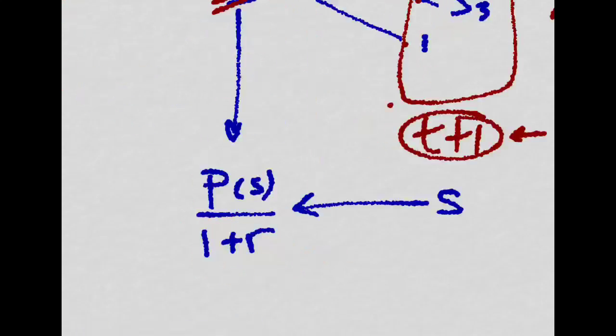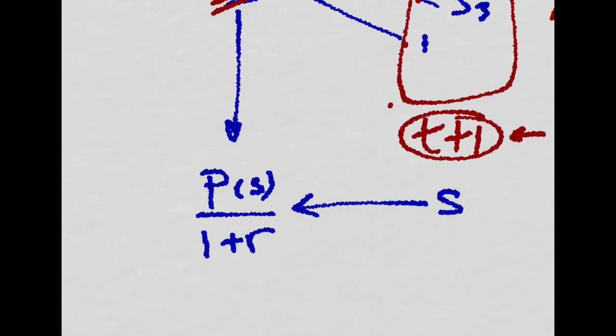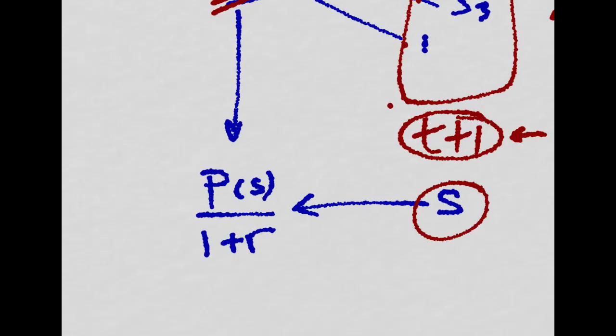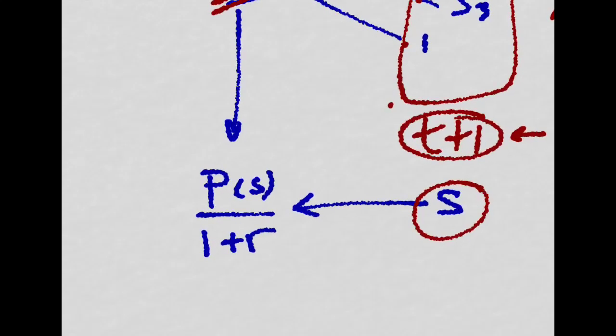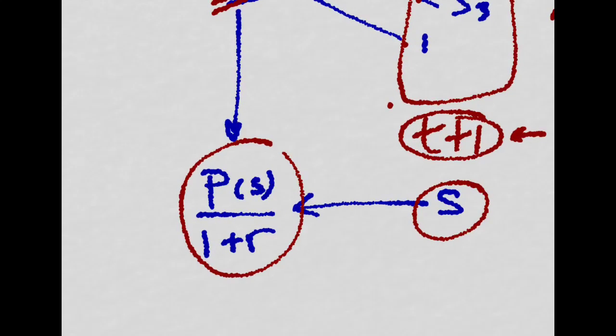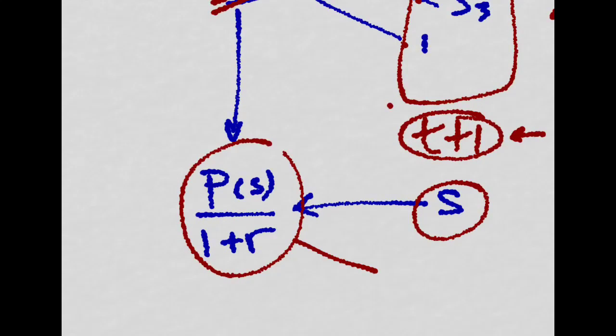And the present value of the price of a security that insures you against the state S would just be the price over 1 plus R. So this is just the price of the Arrow-Debreu security that insures you against S at period T.